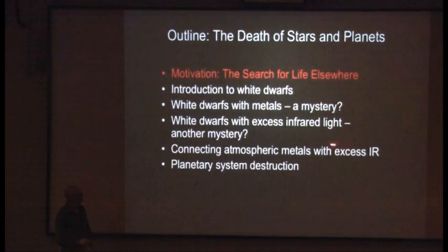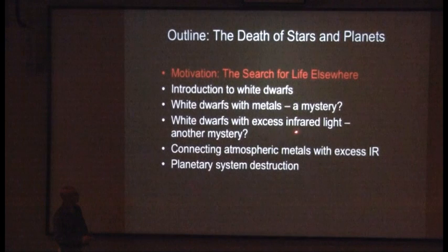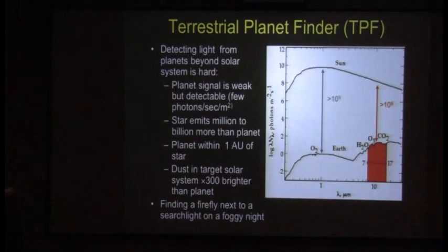Now there's a class of white dwarfs that have metals in them. So I'll go into a little bit of detail about that. This was a mystery, we'll talk about the mystery a little bit. Then I'm going to talk about another type of white dwarf which has more infrared light than people expected. I'll connect the two and then I'll bring them back to how planets get destroyed and what happens in the end.